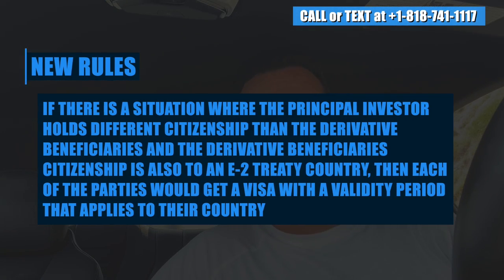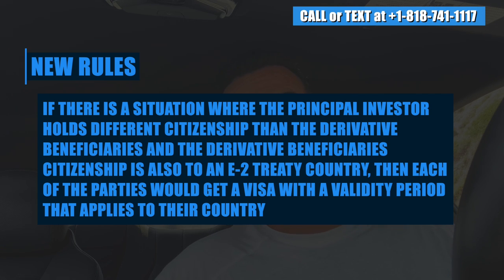Under the new rules, if the principal investor holds different citizenship than the derivative beneficiaries, and the derivative beneficiaries' citizenship is also from an E-2 treaty country, then each of the parties gets a visa with the validity period that applies to their own country. So in that example, the Canadian principal investor would get the five-year visa and the Israeli derivative beneficiaries would get the 24-month visa. This is a major difference from how it was done in the past.